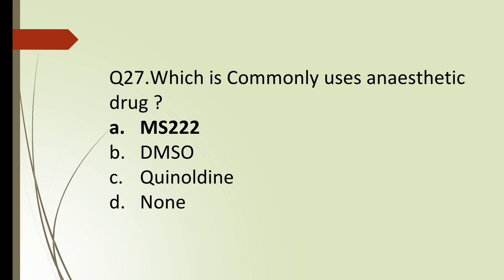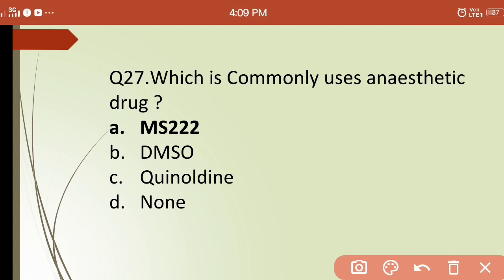Twenty-seventh question: which is the commonly used anesthetic drug? Options are: (a) MS-222, (b) DMSO, (c) quinaldine, (d) none. The correct answer is (a) MS-222 — MS-222 is the commonly used anesthetic drug. DMSO and quinaldine are cryoprotectants, not anesthetics.